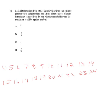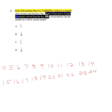Okay, this brings us to our last question dealing with probability, and it's pretty straightforward once you can see what they're asking you to do. It says each of the numbers from 4 to 24 inclusive, you might want to underline that, is written on a separate piece of paper and placed in a bag. If one of these pieces of paper is randomly selected from the bag, what is the probability that the number on it will be a prime number?